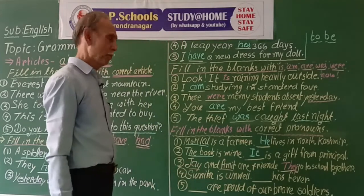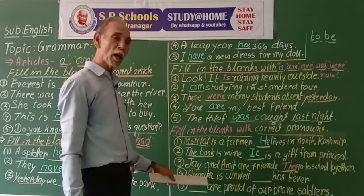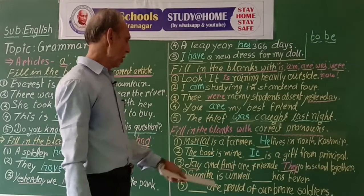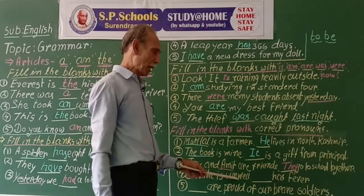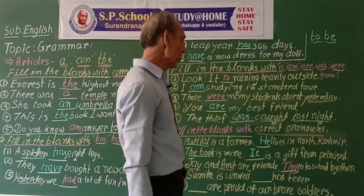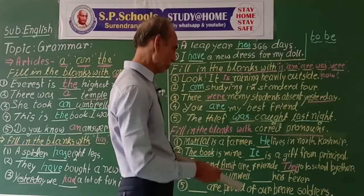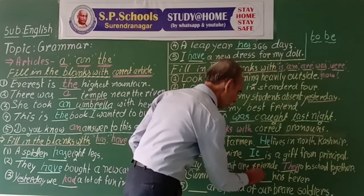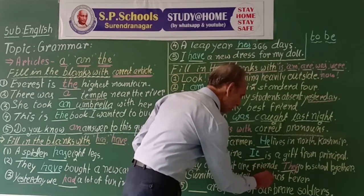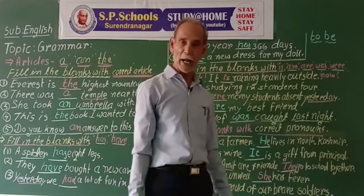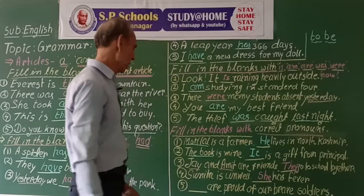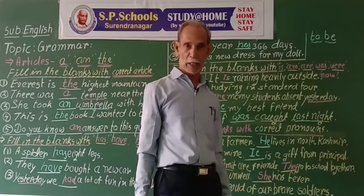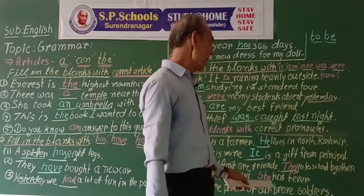Sunita is unwell — not well. Sunita is third person singular feminine gender, so we use 'she' for Sunita. She has fever. If we write Sunil instead, then: he has fever.